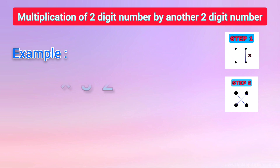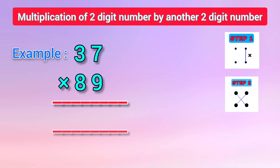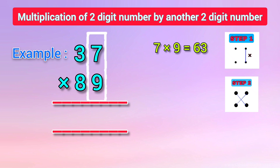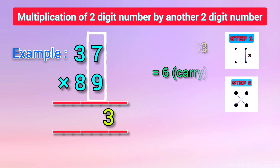Now we try another example: 37 is multiplied by 89. In the first step, we multiply the numbers in the right column. That is, when 7 is multiplied by 9, we get 63. We put down 3 and carry over 6 to the next step.